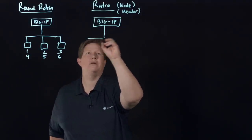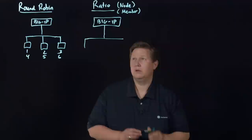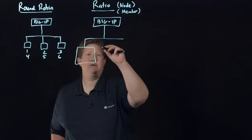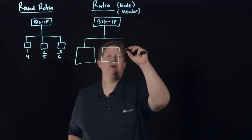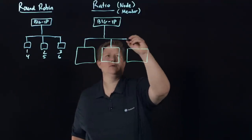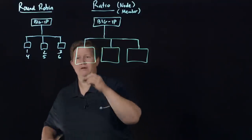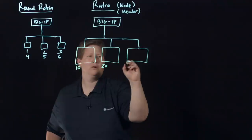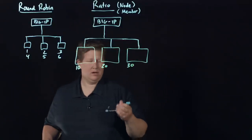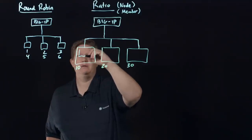So ratio can be configured as node, you'll see this in the parentheses, or member. As you come down and say we'll draw this a little bit differently this time, this will be my node in green. I'll put these in green, those are my nodes.